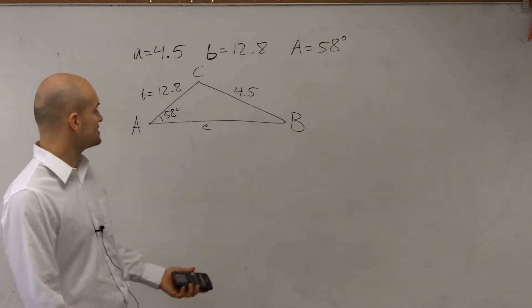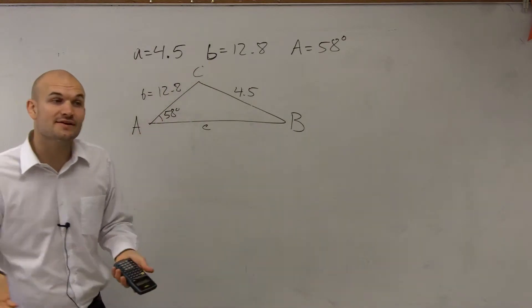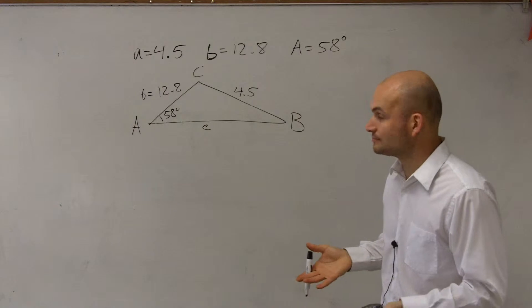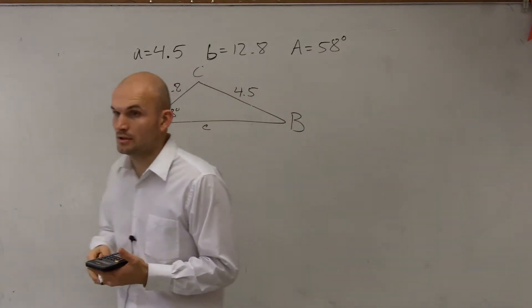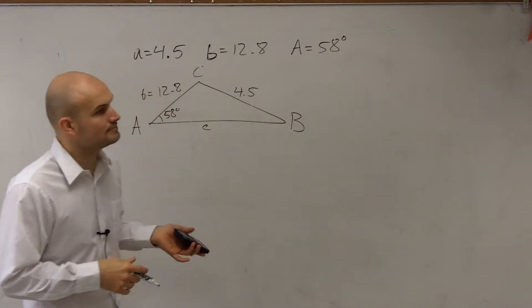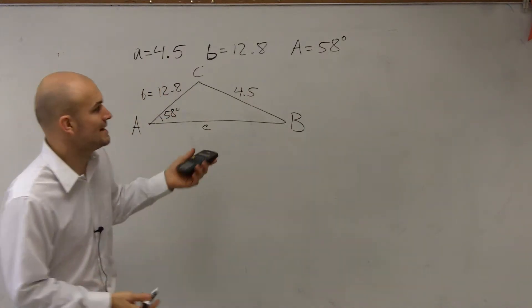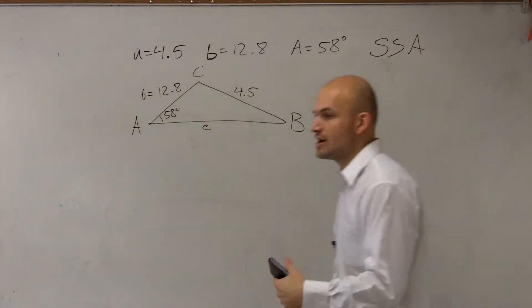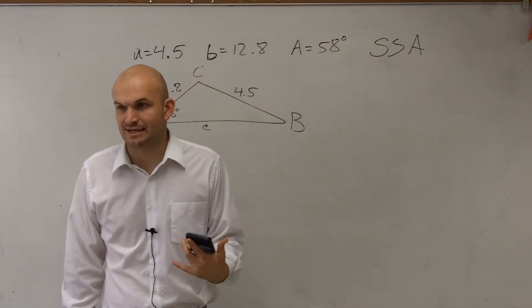So by looking at this, what you guys can notice is I have side-side-angle. Now this is a different one than the problems that we worked on last class period. Last class period, we only worked on having an angle-side-angle or having angle-angle-side. But now we're working with the problem with side-side-angle. And the important thing for you guys to understand when working with triangles is when you have a side-side-angle, this is what we call our ambiguous case.